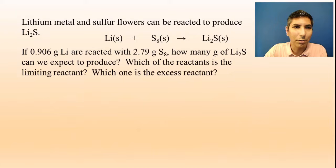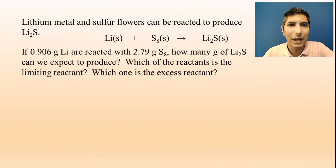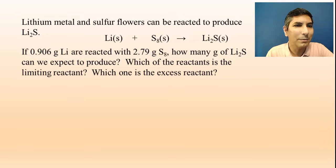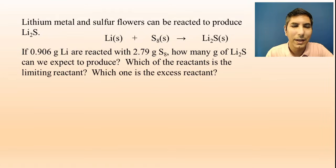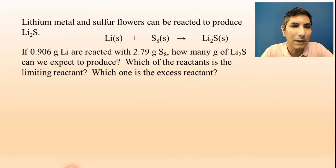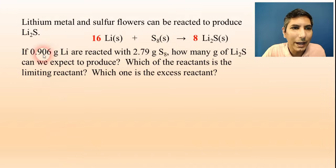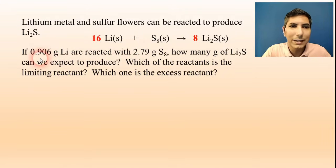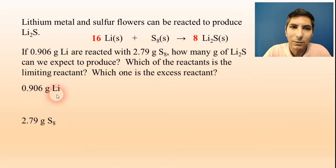We have lithium metal and sulfur (S8) that can be reacted to produce lithium sulfide — there's the equation. If 0.906 grams of lithium are reacted with 2.79 grams of sulfur, how many grams of lithium sulfide can we expect to produce? Which reactant is the limiting reactant and which is the excess reactant? As always in a reaction stoichiometry problem, we balance the equation first. Now we have a balanced equation, and we have two quantities of reactants given. We write down both: 0.906 grams of lithium and 2.79 grams of sulfur.